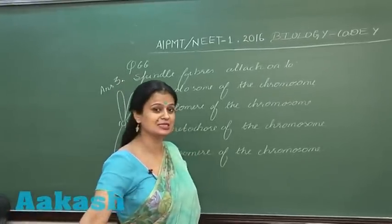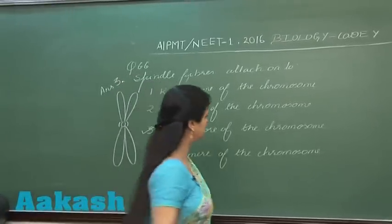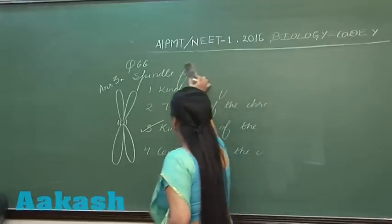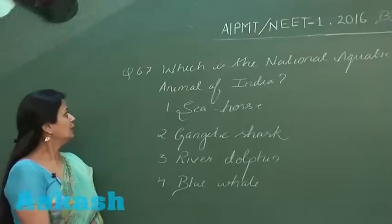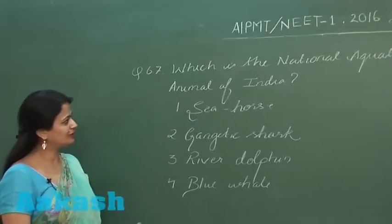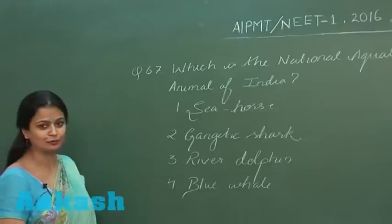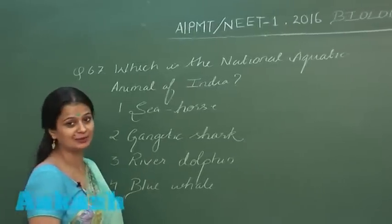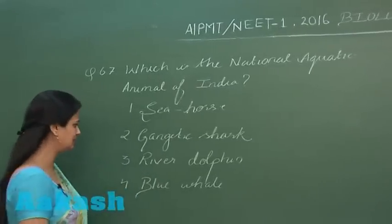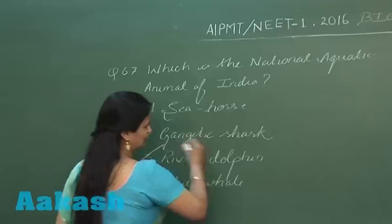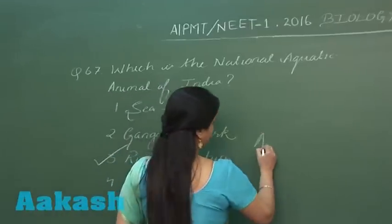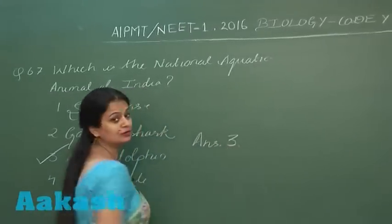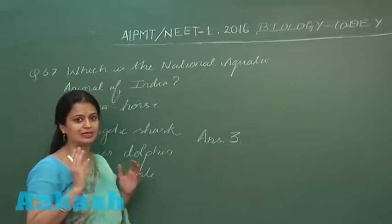Let's discuss question number 67. It's a theoretical question — we have to look for the national aquatic animal of India, which is the river dolphin. The right answer for this question is option number 3.